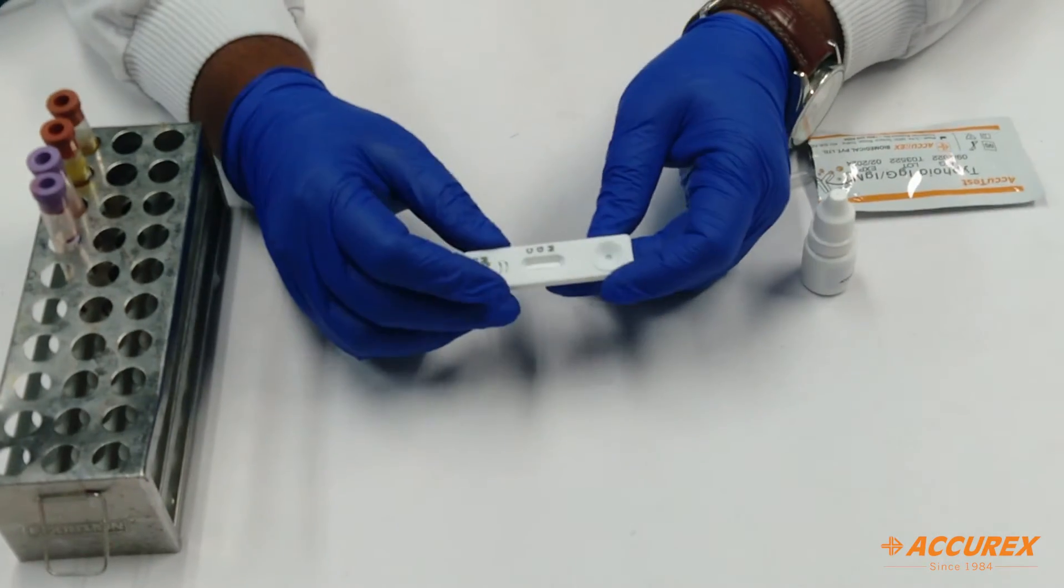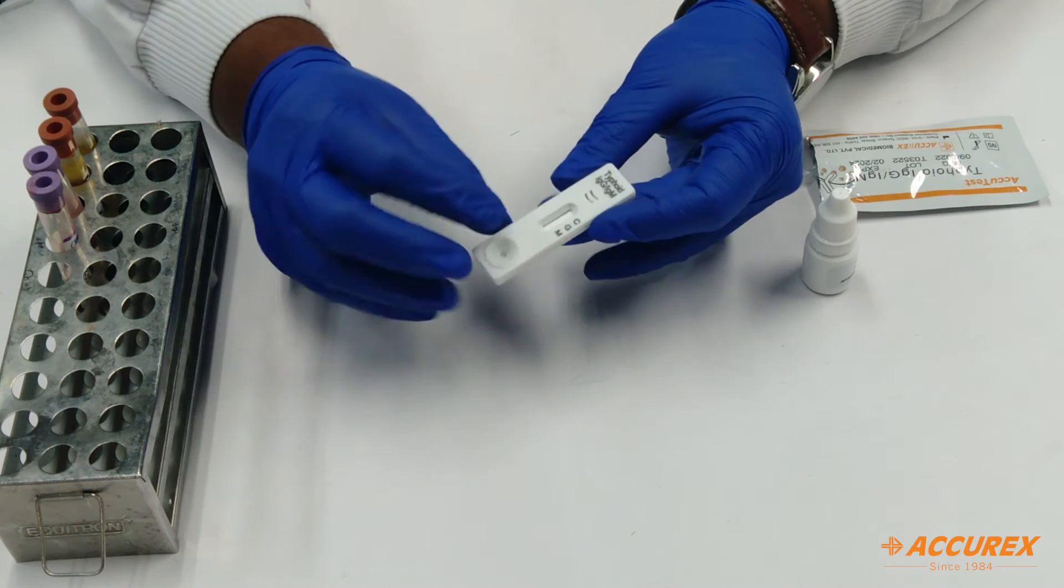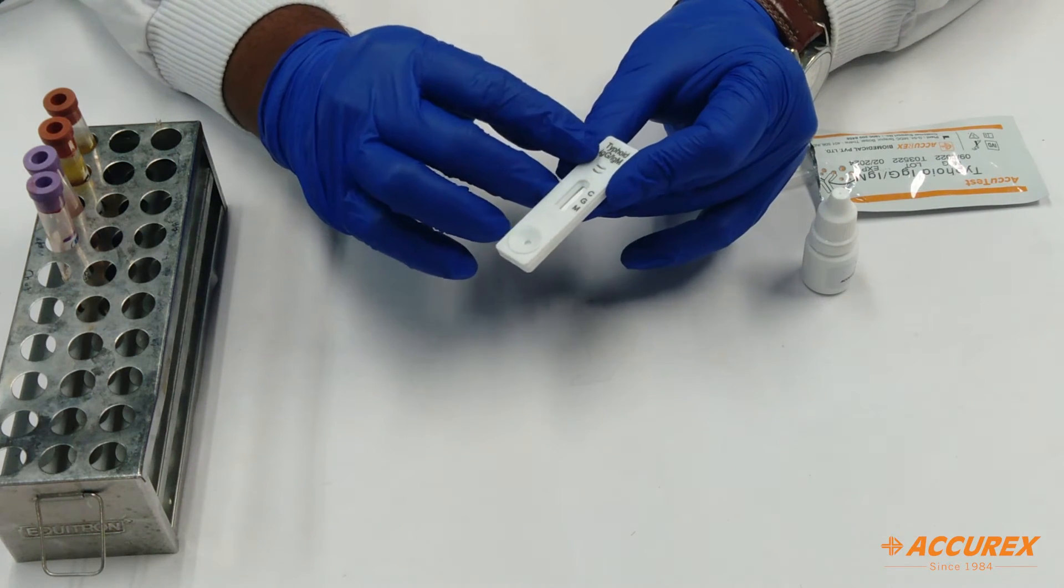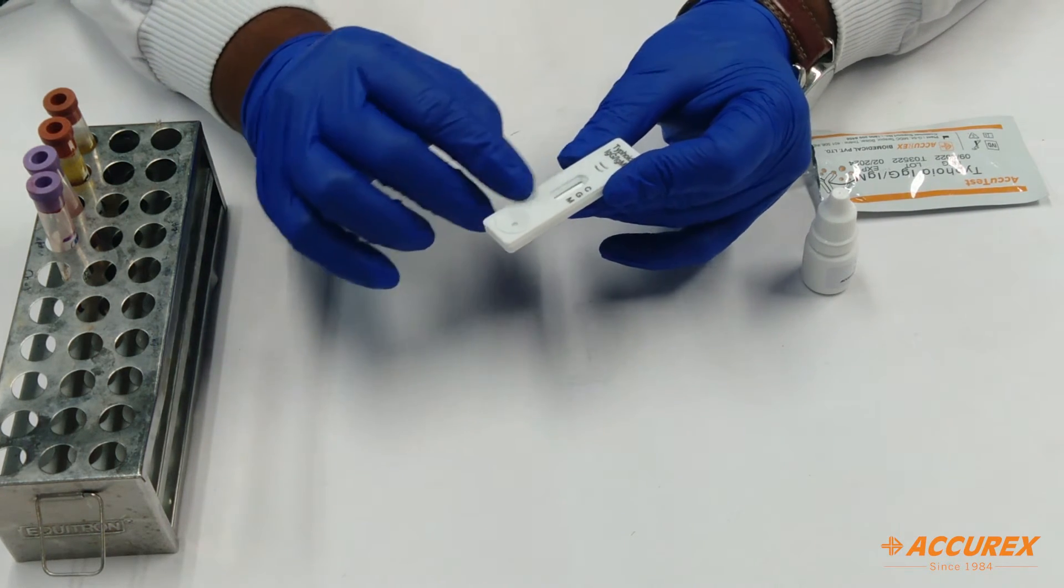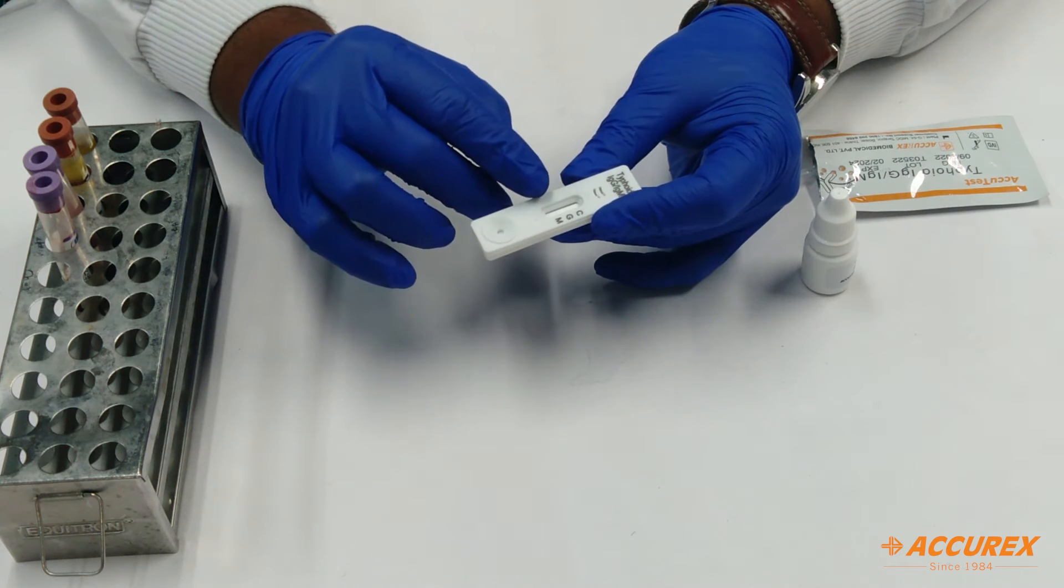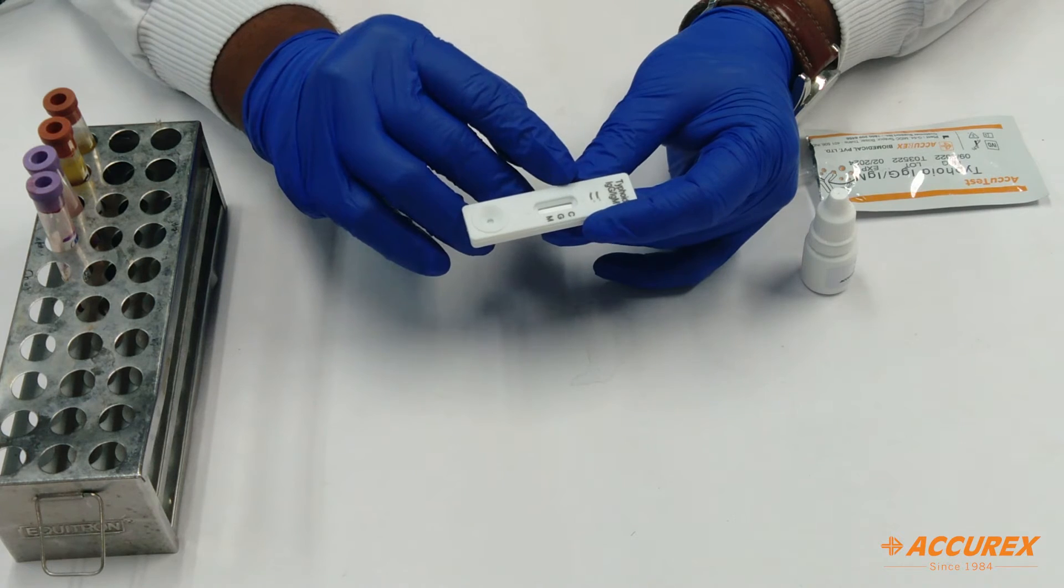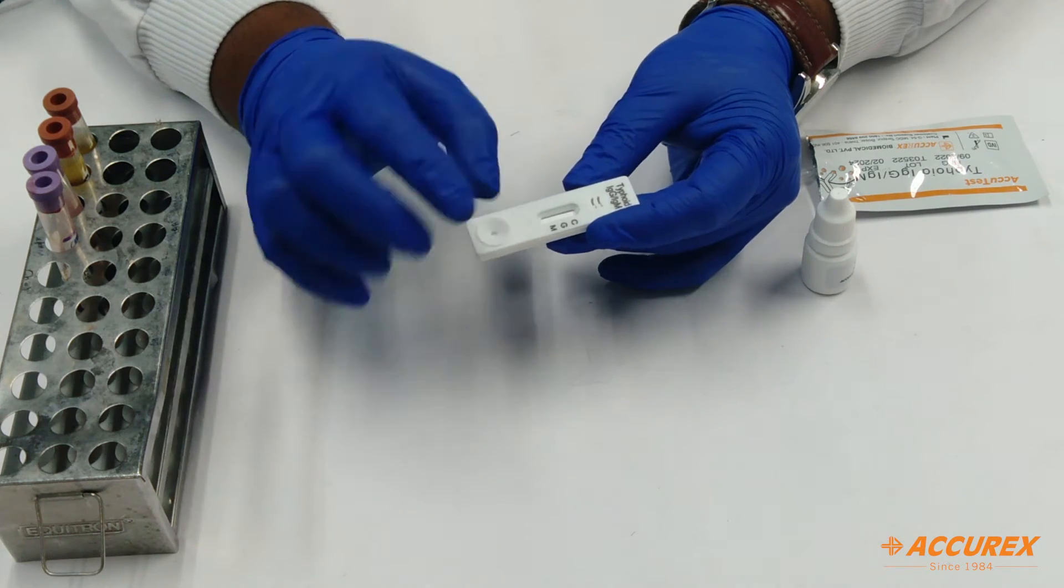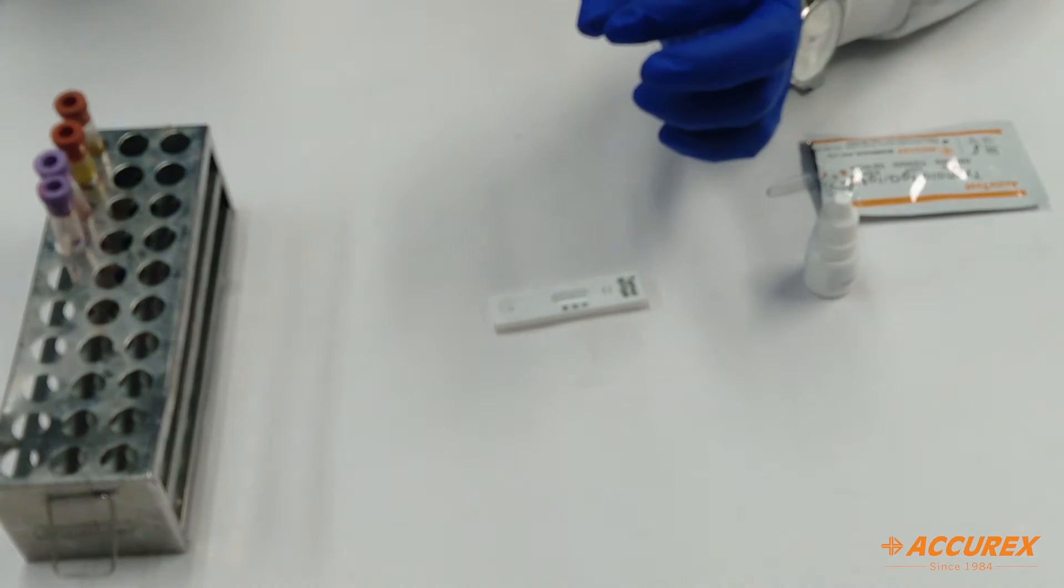This is the card. You can see here in the card, typhi IgG and IgM is mentioned. There are two wells: one is for the sample and buffer, second window is for testing result. C is for control, G is for IgG, and M for IgM. Before testing, always write the patient name.